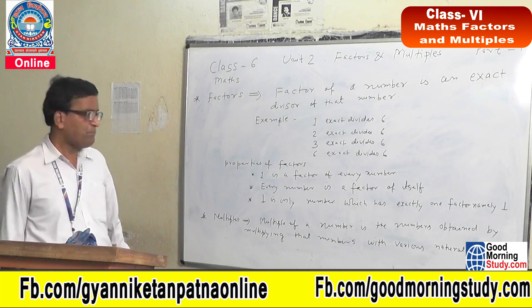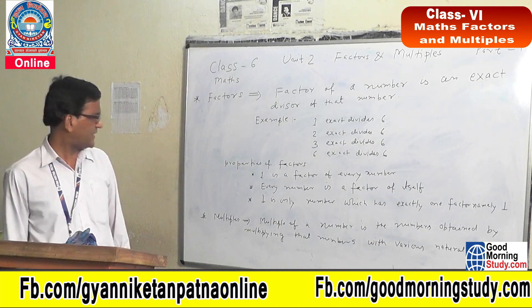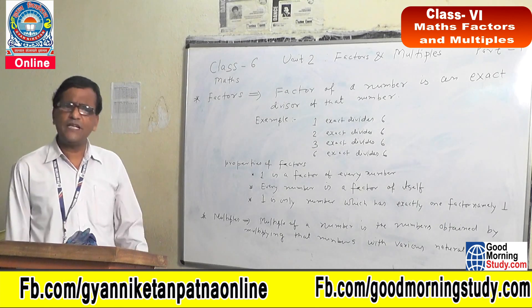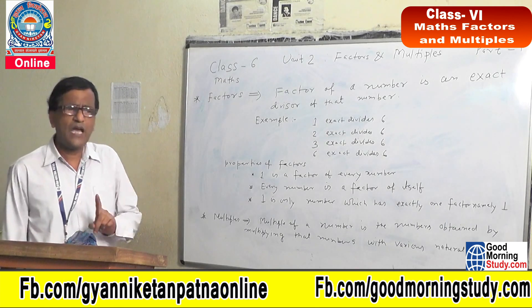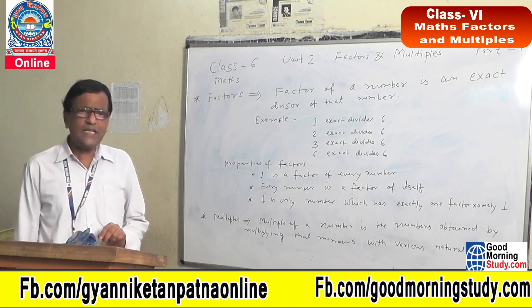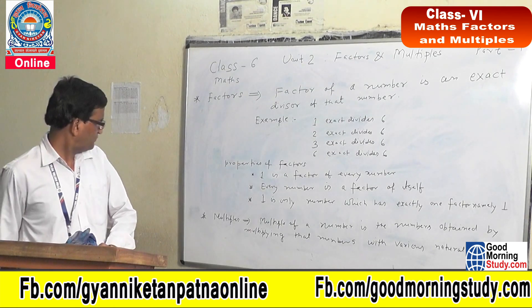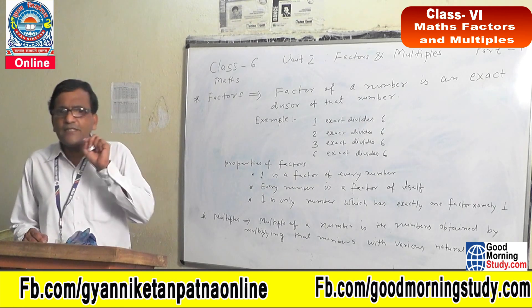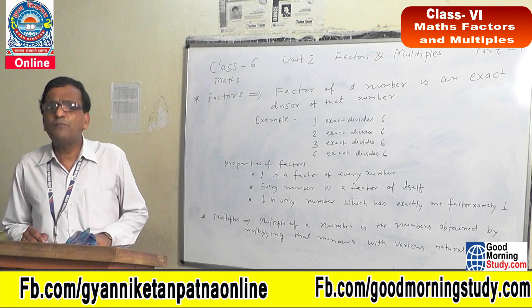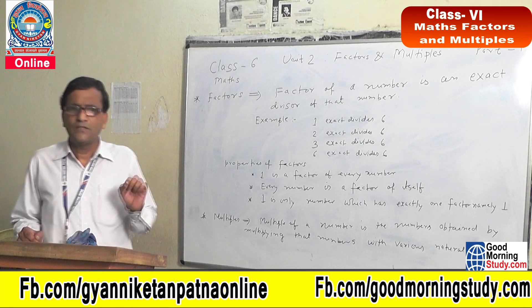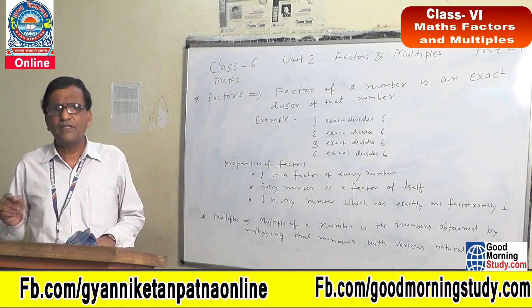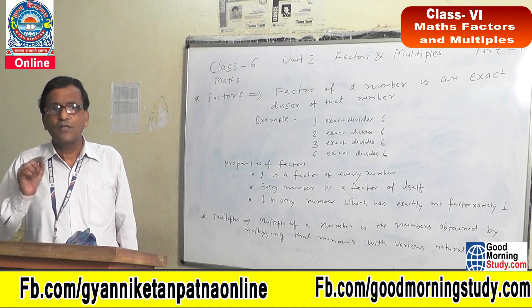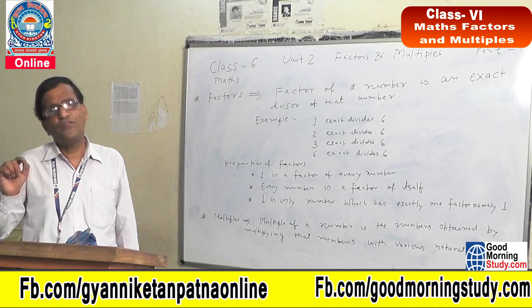Now, come to the properties of factors. First property: 1 is a factor of every natural number. Second property: every number is a factor of itself. Third property: the number of factors of a number is finite, which means countable.